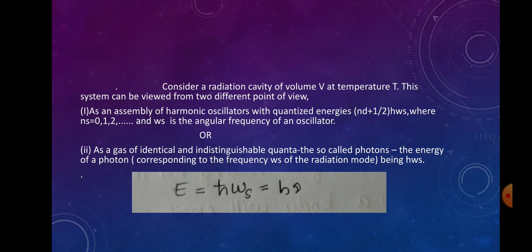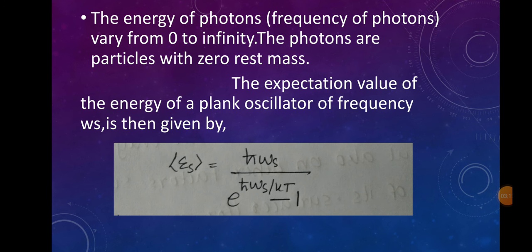The second point of view treats radiation as identical and indistinguishable particles called photons. Photons are massless with integral spin, so they obey Bose-Einstein statistics. The energy of a radiation mode is ℏω_s. Since photons can be created and destroyed freely, the chemical potential μ is zero. Therefore photons are spin-1 particles with a symmetric wave function.